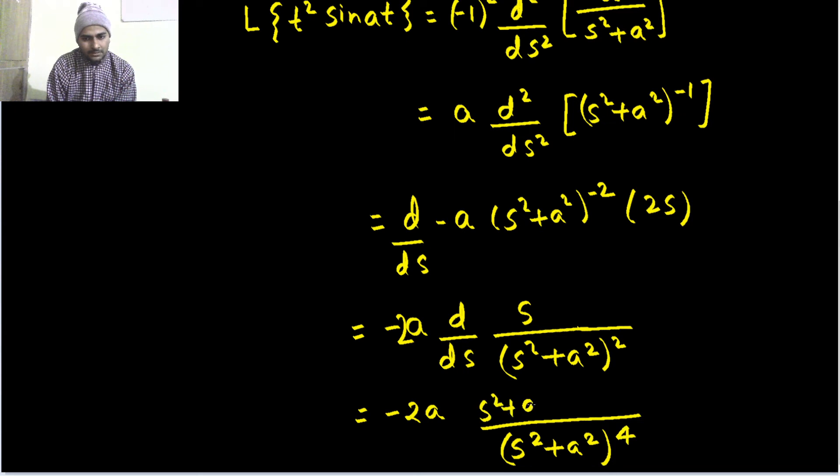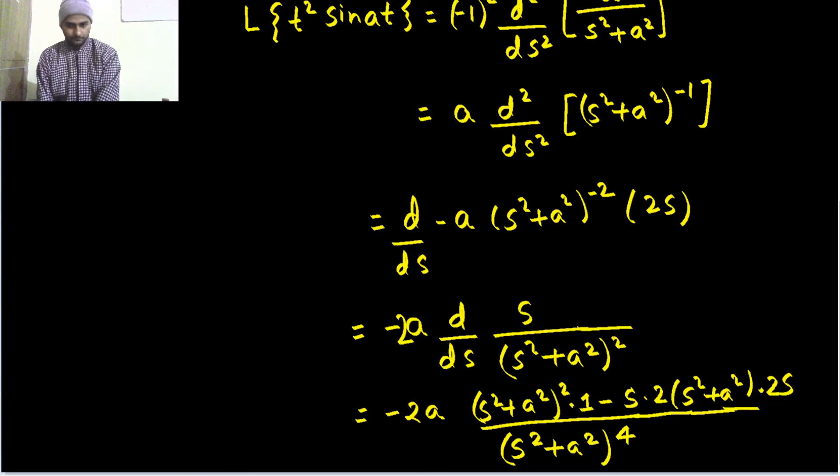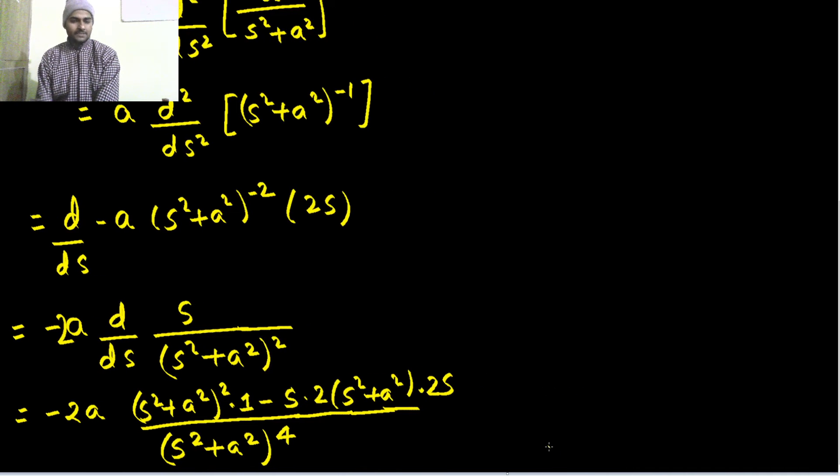Denominator as it is, derivative of numerator. So, derivative of s with respect to s is 1, minus sign in the middle. Now, denominator as, numerator as it is, sorry, derivative of denominator. So, derivative of denominator is, first of all by power rule and then the derivative of s square plus a square will give you 2s. Let's move ahead.